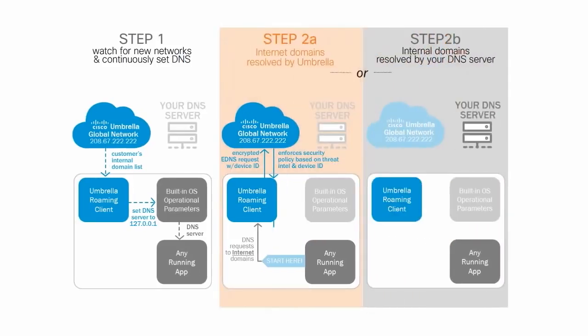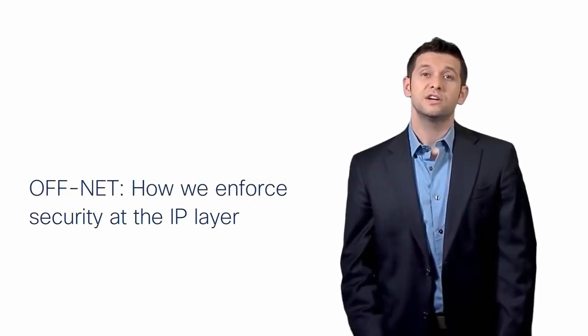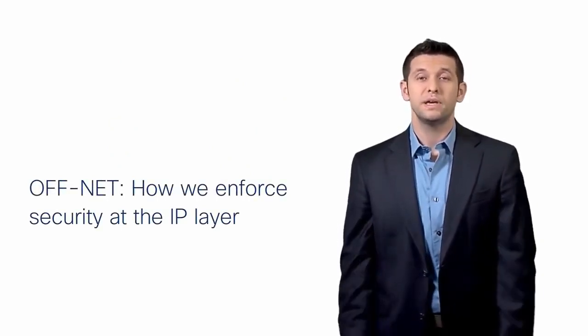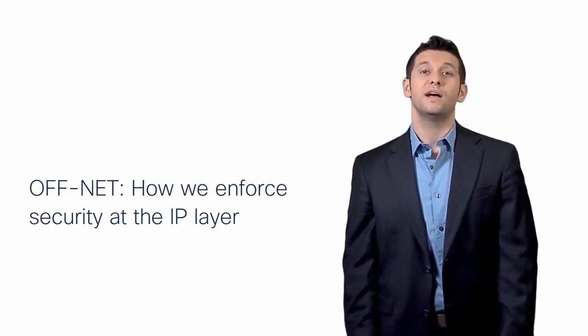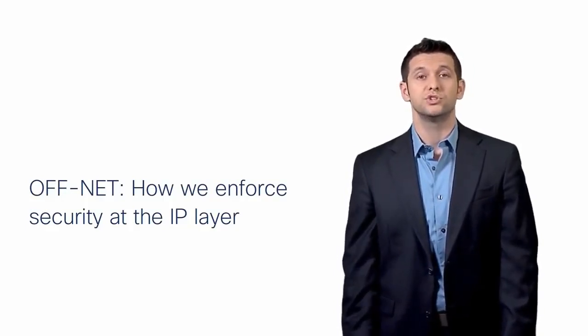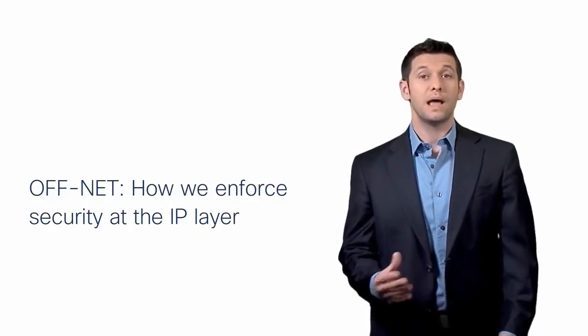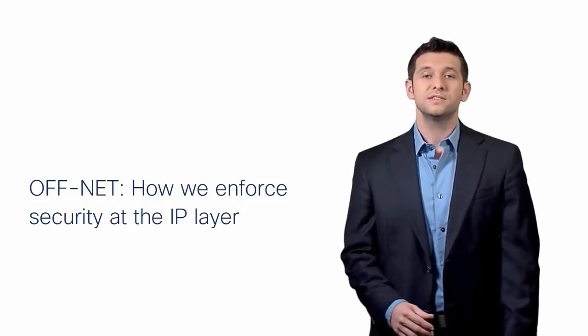All security enforcement happens in the cloud. The Umbrella Roaming Client forwards requests for external internet domains to Umbrella, embedding a unique identifier that matches the device's host name and encrypts the DNS requests to prevent man-in-the-middle eavesdropping on public networks. Requests for internal domains are forwarded to the network's local DNS server. On Windows devices, the roaming client makes minor edits to the .NET API, registry file, and WMI configuration. For Mac, just the resolve.conf file is edited.